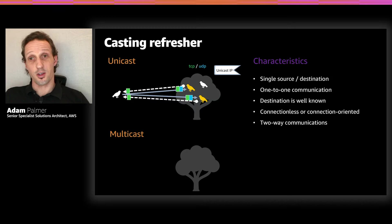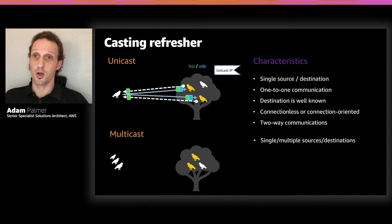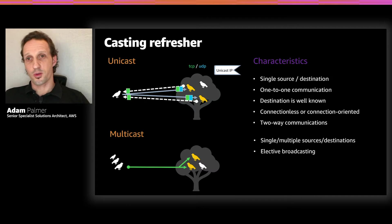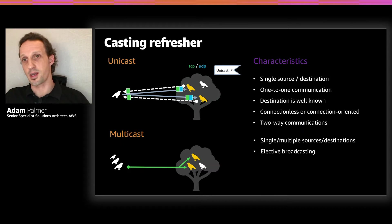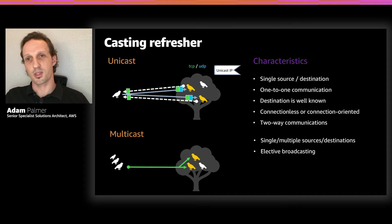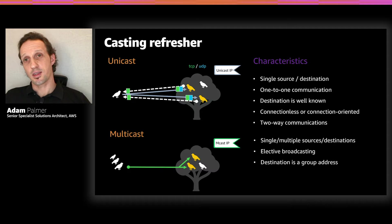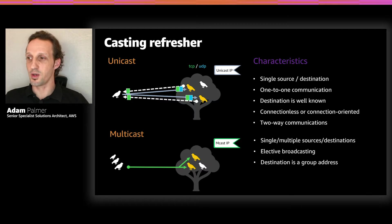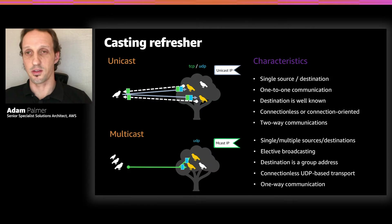Multicast communications can have single or multiple sources and single or multiple destinations. It's often thought of as an elective broadcasting technique — broadcast sends information indiscriminately to whoever may be there, whether they want it or not. Multicast has some smarts in that recipients can signal to networking hardware that they'd like to receive information on that particular network segment. From the perspective of the source, the destination is a group IP — the source just knows there's a group address to send to. At the transport level, this means we use connectionless protocols such as UDP, and communications are one-way.